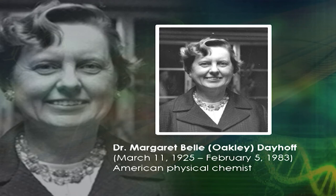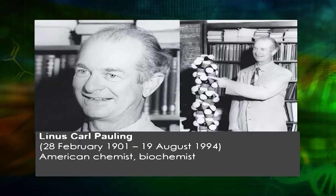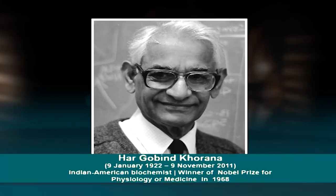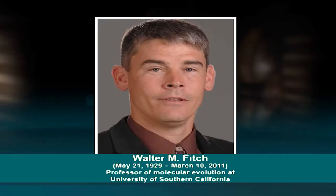In 1965, Margaret Dayhoff published the Atlas of Protein Sequence and Structure, containing sequences of 65 proteins and considered the first publication in bioinformatics. Emile Zuckerkandl and Linus Pauling introduced the molecular clock concept, suggesting that the rate of amino acid substitutions is linear over time. Marshall Nirenberg and H. Gobind Khorana in 1966 completed the genetic code correlating the triplet code for each amino acid. In 1967, Zabalski and Summers showed that only one DNA strand acts as template during transcription. Fitch and Margoliash developed a phylogenetic tree comparing the amino acid sequence of cytochrome c from 20 species ranging from fungi to mammals.